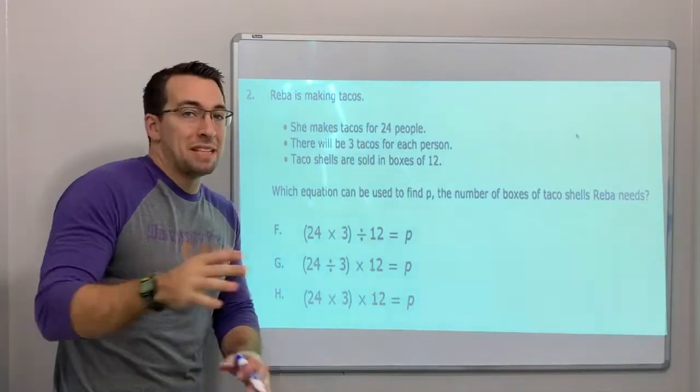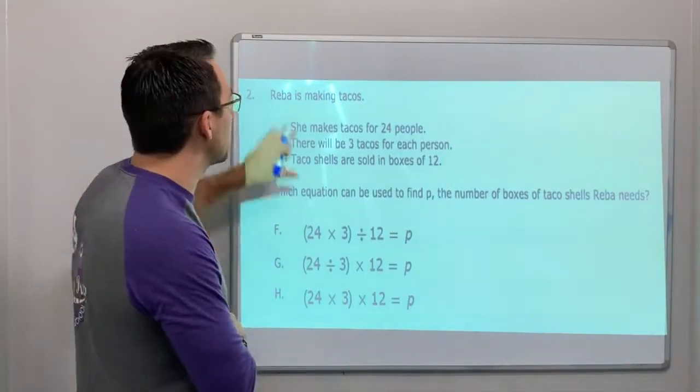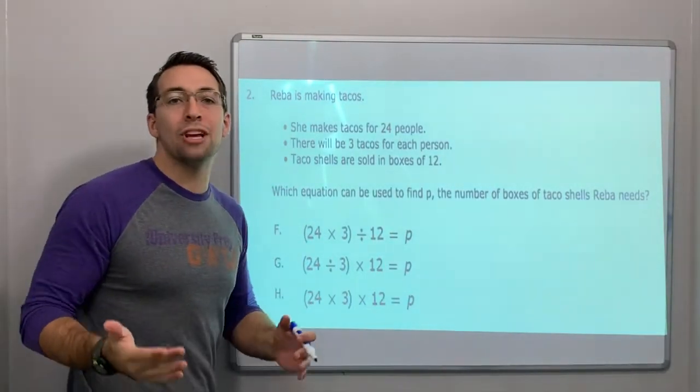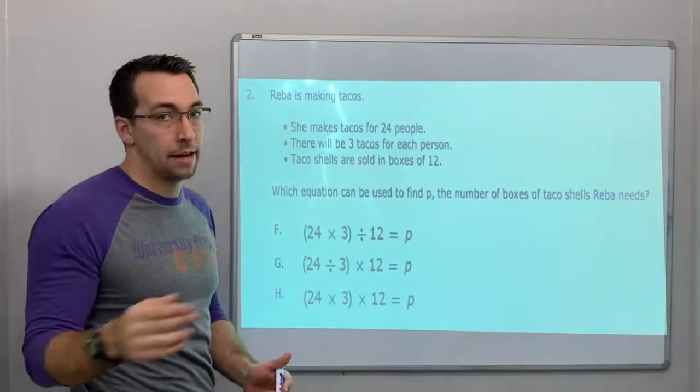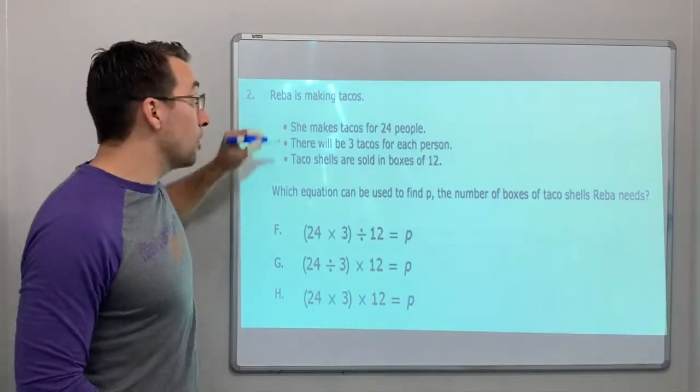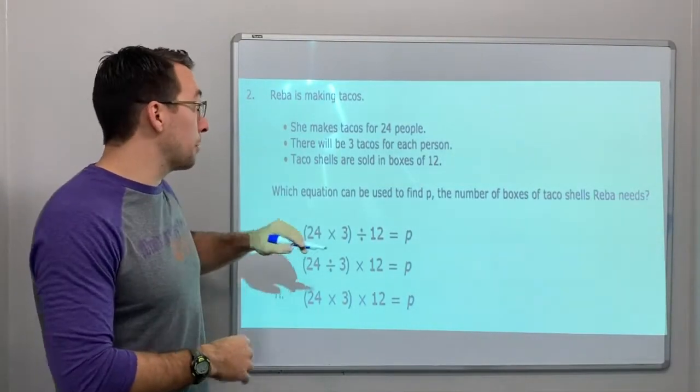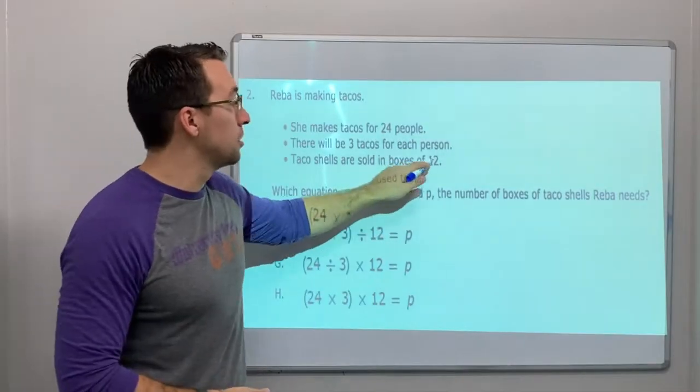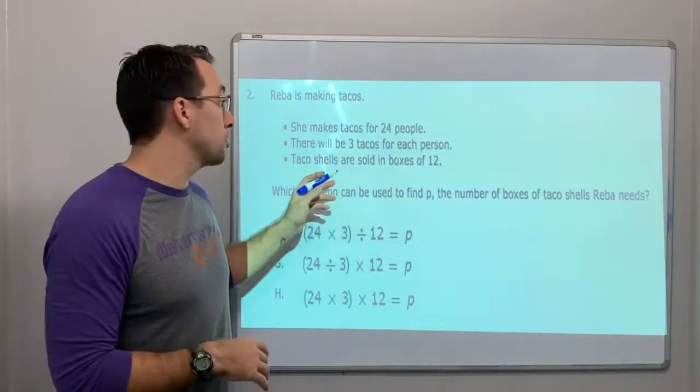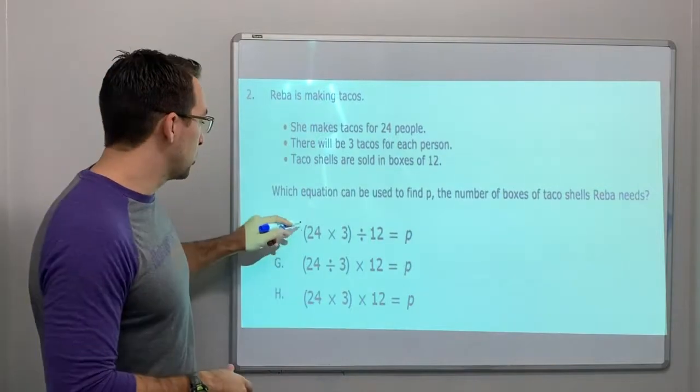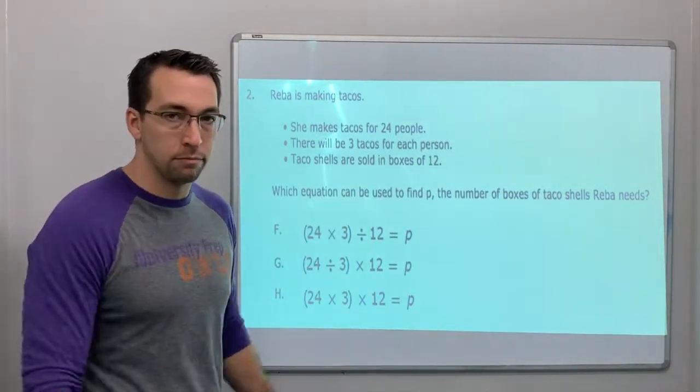Reba is making tacos. This is the exact same question. I just wanted to show you maybe it's going to be shown in a different type of formatting. She makes 24 tacos, three tacos per person. The shells are sold in boxes of 12. 24 times 3 divided by 12.